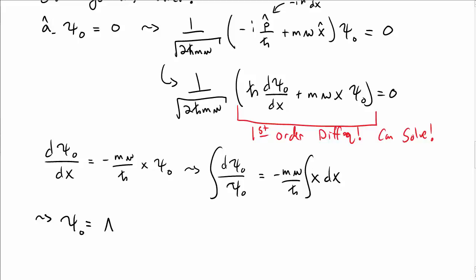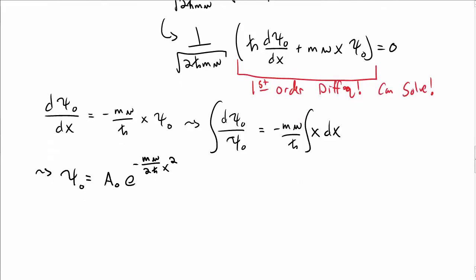And then my solution that I get is ψ₀ is a constant A₀ e^(-mω/2ℏ x²).